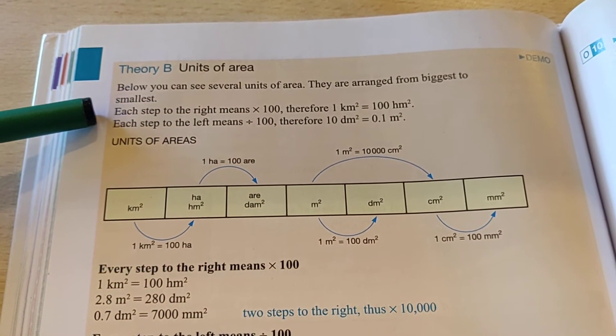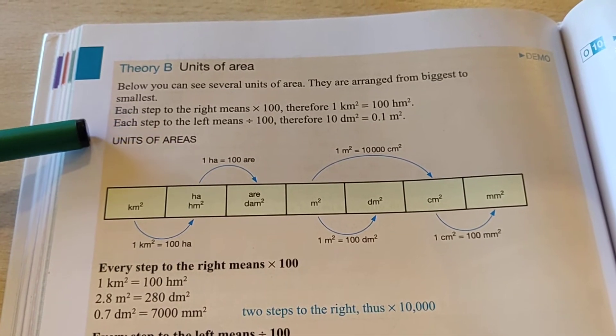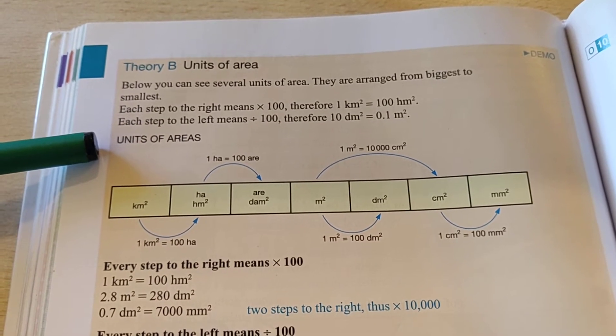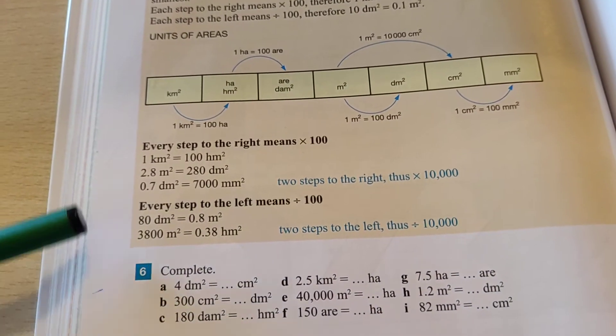Here it also says, each step to the right means times 100, and each step to the left means divided by 100. And here you see a few examples.